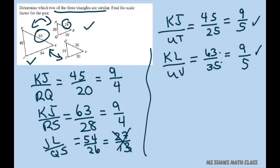Let's see if the last one works. JL divided by TV. That's 54 divided by 30. We divide both of those by 6. And that gives you 9 fifths.